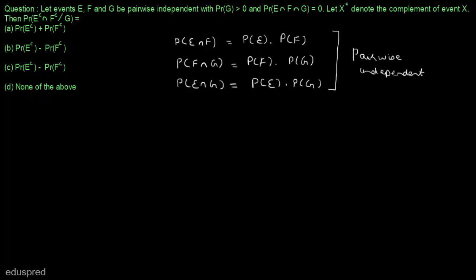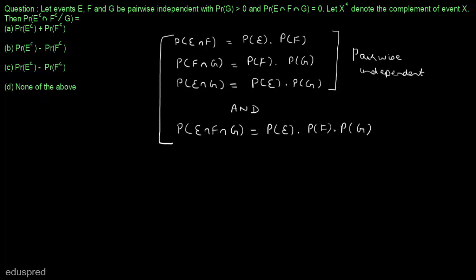Note that there is a difference between pairwise independent and independent. Pairwise independent means those three conditions hold, while independent (or mutually independent) means those three conditions plus a fourth condition also hold: probability of E intersection F intersection G equals probability of E multiplied by probability of F multiplied by probability of G. If only the first three conditions hold and the fourth does not, we say they are pairwise independent.